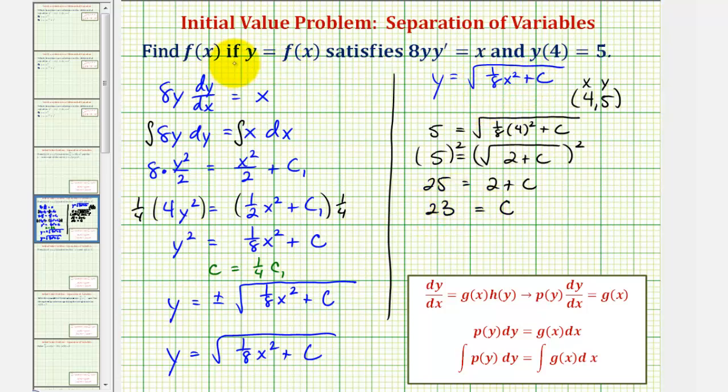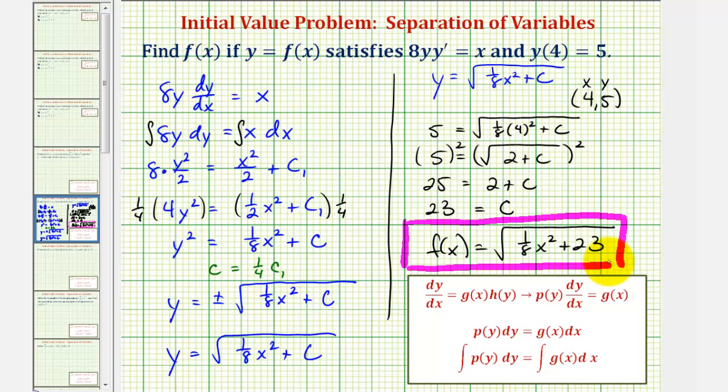Which means our particular solution is y or f(x) equals the square root of 1/8 x to the second plus 23. I hope you found this helpful.